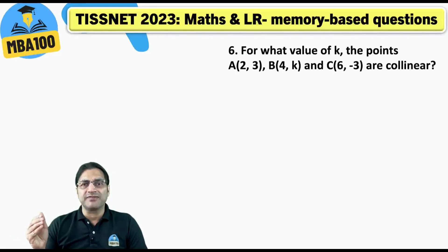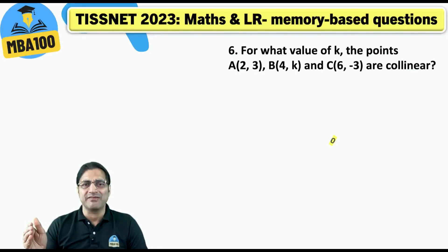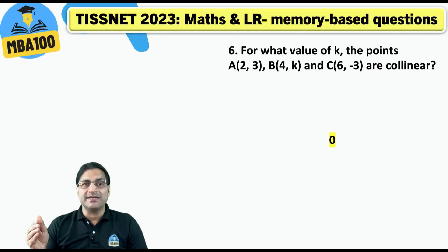For what value of K, you just had to equate the slopes of A-B and B-C. That would have given you the answer: K is 0.